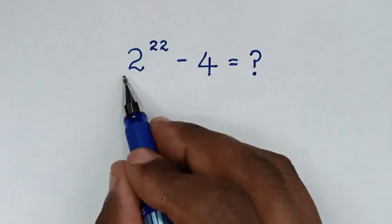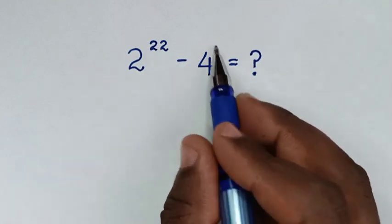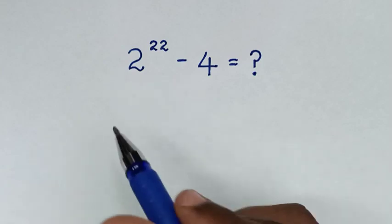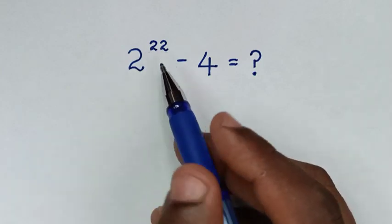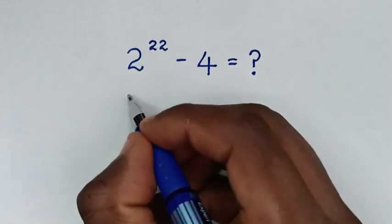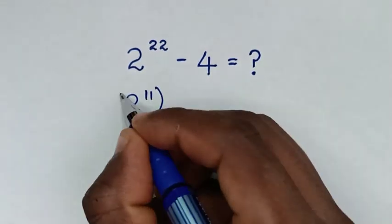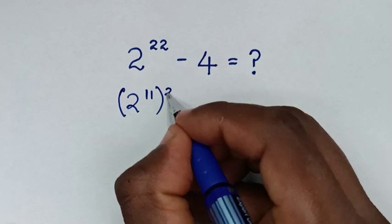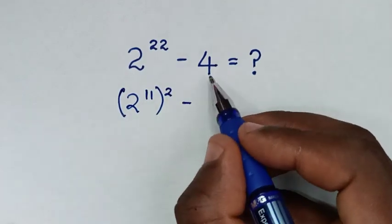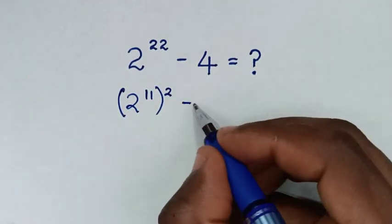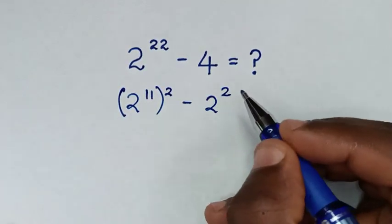Now in the first step, we'll make this in the form of a perfect square. So 2 power of 22 into square is the same as 2 power of 11, then bracket square, minus 4 into square is the same as 2 square.